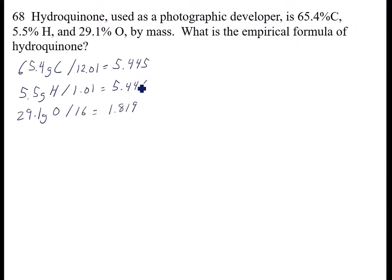The next step is to divide each of these by the smallest number, which is to divide by 1.819. This one's 1. This one gives me 2.99. I'm within that point, plus or minus 0.1, so that becomes 3.